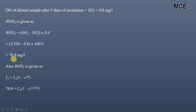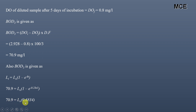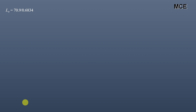For the 5-day BOD, L_T is 70.9 and L_0 is the ultimate BOD. The rate constant K is given as 0.23 and T is 5. Solving for L_0: 70.9 = L_0 × 0.6834, so L_0 (ultimate BOD) = 70.9 / 0.6834 = 103.74 mg per litre. This is the ultimate BOD — it does not depend upon temperature.